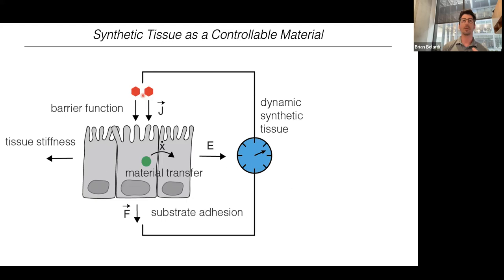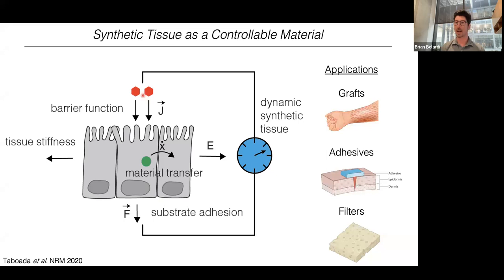My lab is interested in taking these tissue functions and behaviors and placing them under engineering control to give rise to a new material that we call dynamic synthetic tissue. We think of a variety of applications in the biomedical space — specifically, next-generation grafts, adhesives, and filters. One application we're particularly interested in is developing next-generation graft material for burn victims, who have large open wounds requiring low permeability to stop bleeding and block pathogens.